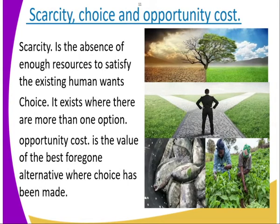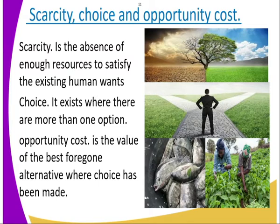Now we go to scarcity, choice, and opportunity cost. Scarcity is the absence of enough resources to satisfy existing human wants. For example, there is not adequate fish everywhere in order to satisfy human wants. Looking at the nature of the landscape, one side is dry and the other has water — so the things necessary for a green environment are scarce.